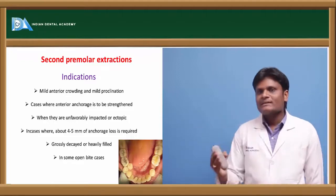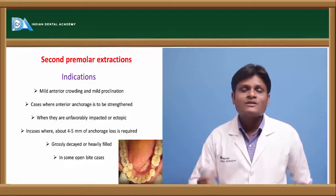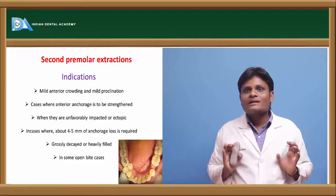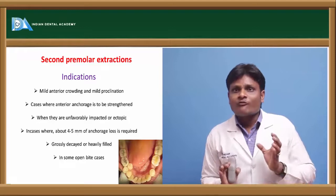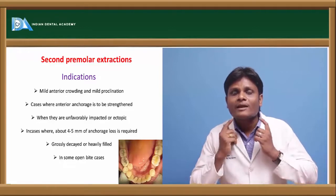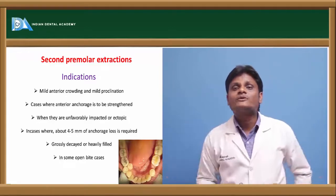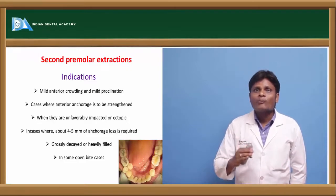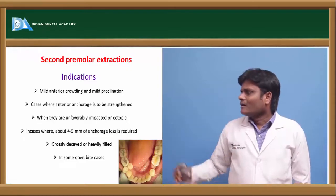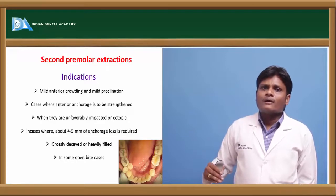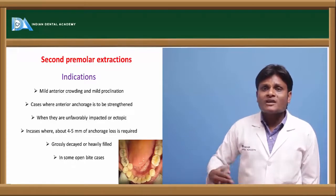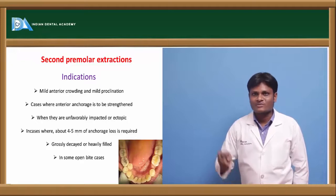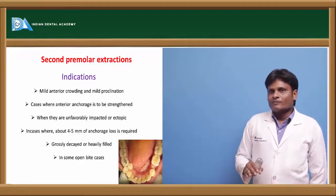In cases where we need four to five mm of anchorage loss — mild proclination or mild crowding — we go for second premolar extractions. In some open bite cases, we extract the second premolar so that we mesialized the molar; as the molar comes forward, there is loss of the wedging effect on the mandible, the mandibular plane closes, leading to reduction of the open bite and obtaining an optimum bite. Usually, first premolars and second premolars are the most commonly therapeutically extracted teeth in orthodontics.